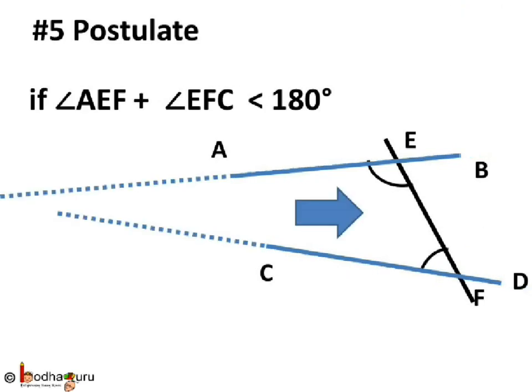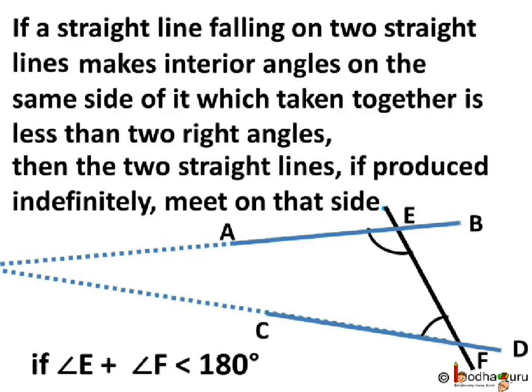This means the lines will meet on the side where the sum of interior angles is less than 180 degrees. And that's why Euclid said,